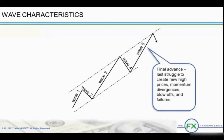Wave five is the final advance to point T, the termination point. In commodity bull markets, they are often characterized by explosive blow-offs, but in currencies and stocks, they are usually not. Wave five is the trader's last struggle to create new high prices. It is not as enthusiastic or euphoric as wave three. Generally, the slope of the price line is less steep than in wave three. Momentum divergences are evident as the momentum slows since it is the end of a five-wave sequence. Optimism continues, and this is the best time not to be part of the optimistic herd mentality.